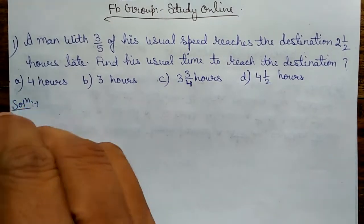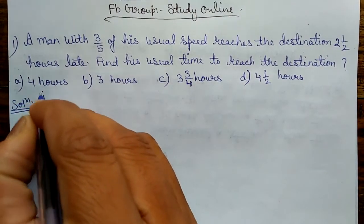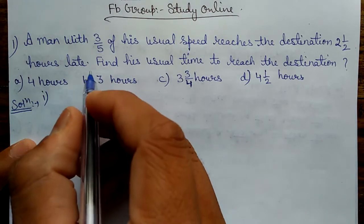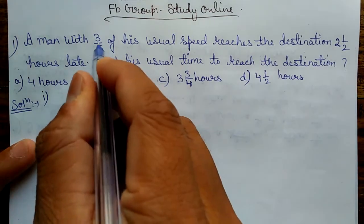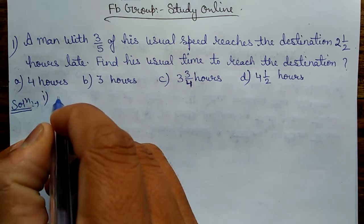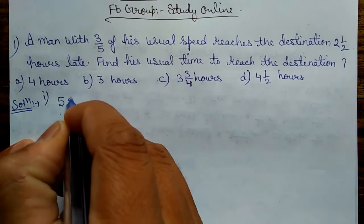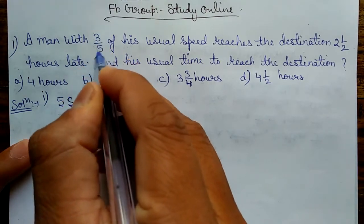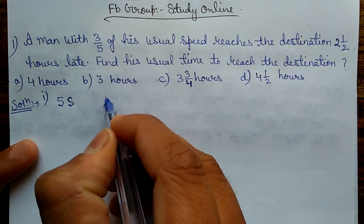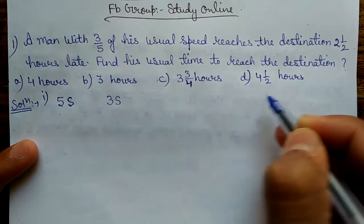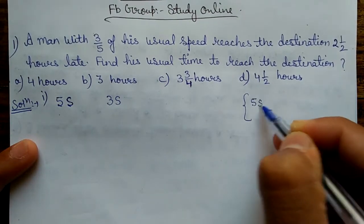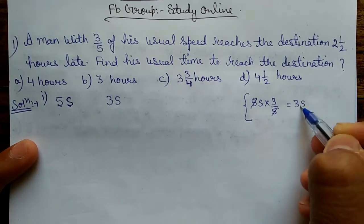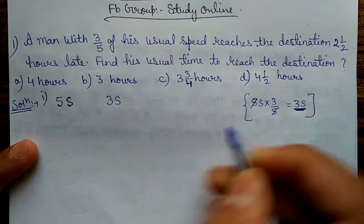First method: I am assuming that in the first case, speed is 5s. Then in the second case, at 3/5 of his speed, that means the speed will be 3s only. Because 5s multiplied by 3/5 gives 3s only. So 3s will be the speed in the second case.